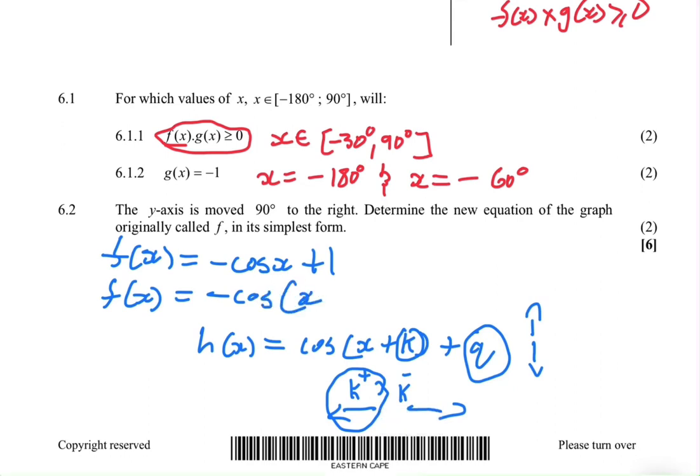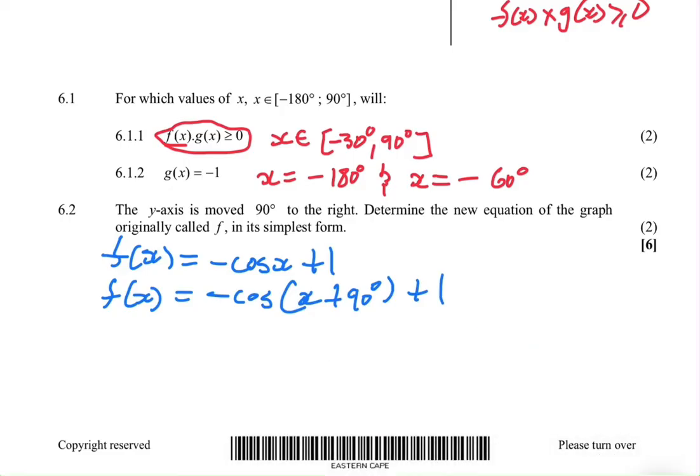So that will be f(x) = -cos(x + 90°) + 1. We're moving it to the left, plus 90°, plus 1. Let me just erase this.